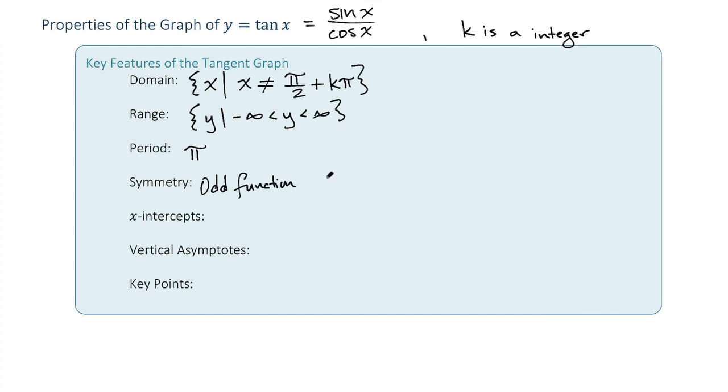In other words, the tangent of negative x is equal to negative tangent of x, which means that we have symmetry in the origin.